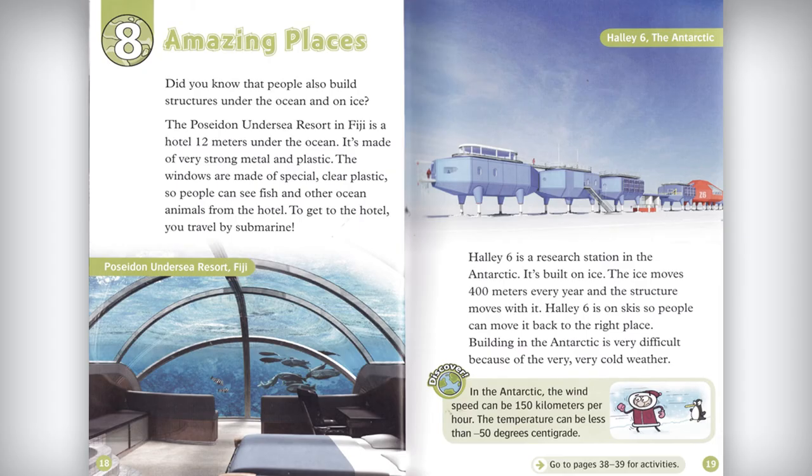People also build structures under the ocean and on ice. The Poseidon Undersea Resort in Fiji is a hotel 12 meters under the ocean. It's made of very strong metal and plastic. The windows are made of special clear plastic so people can see fish and other ocean animals from the hotel. To get to the hotel, you travel by submarine.